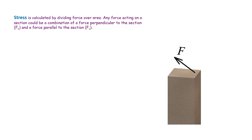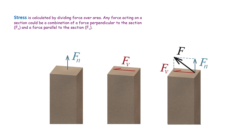Stress in general is calculated as a force divided by area. Any force acting on a section could be projected into a force perpendicular to the section and a force parallel to it. Materials typically show different strength levels depending on the direction of the force with respect to the cross-section area. To distinguish between these cases and describe stresses more accurately, two stress categories are defined: normal stress and shear stress.